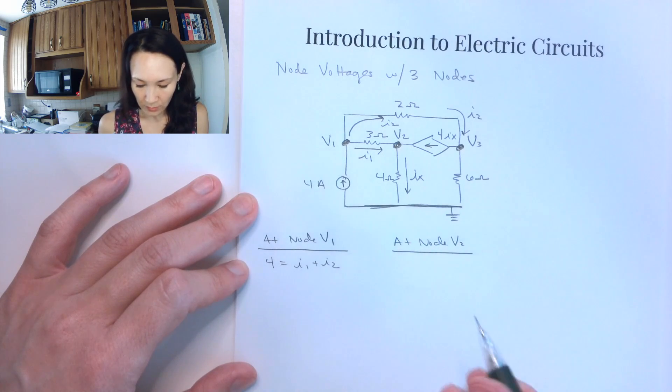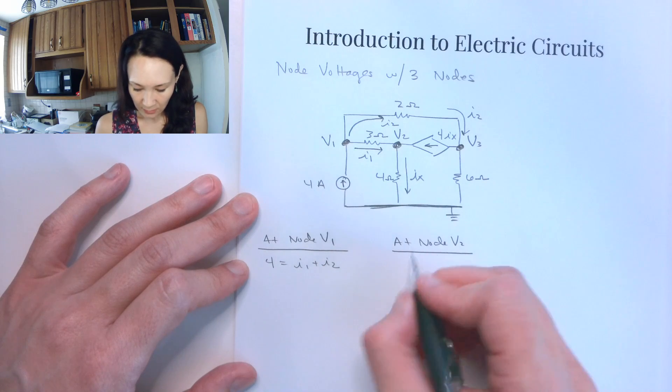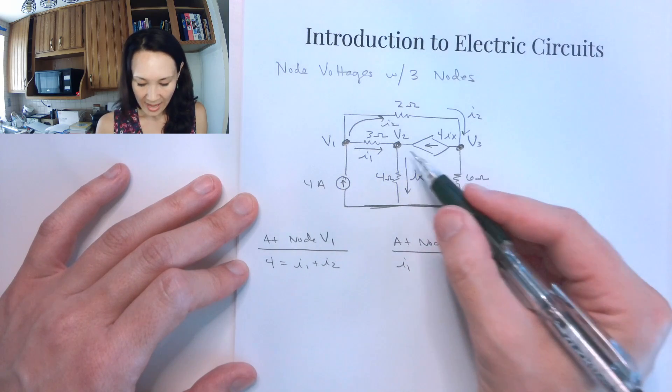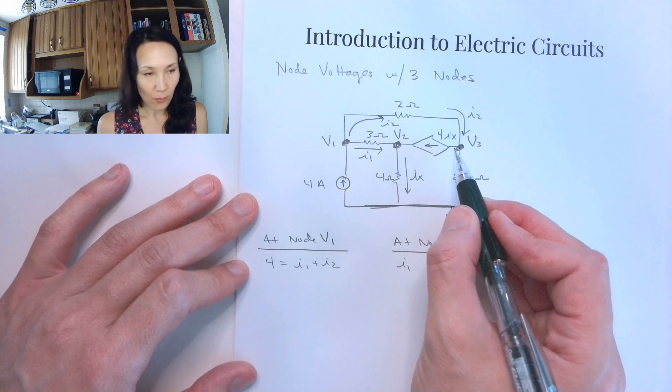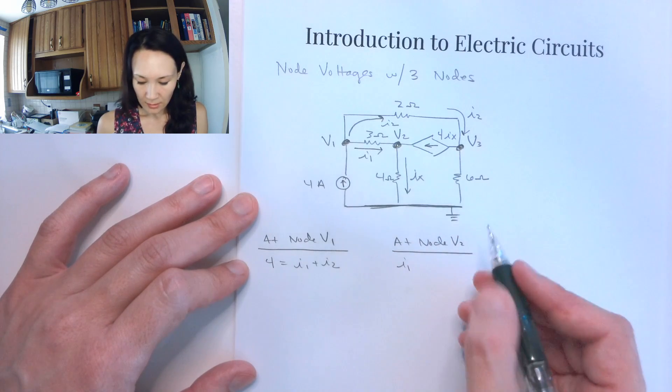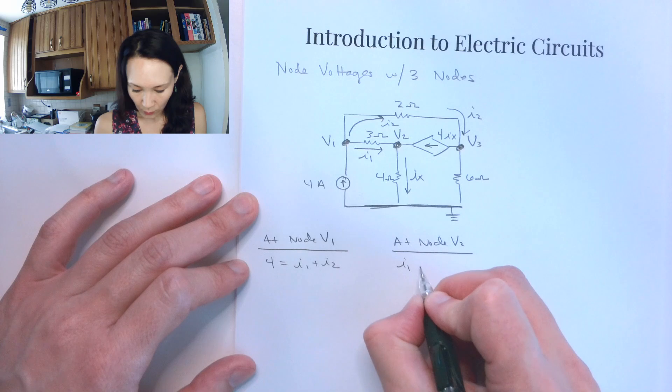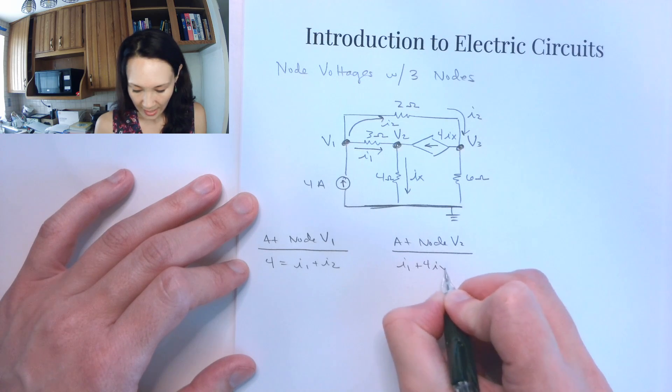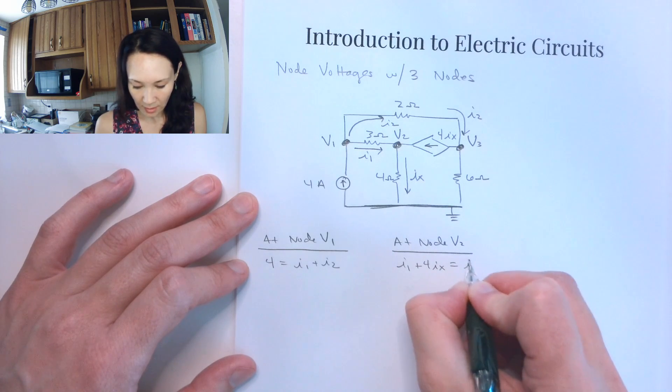So then at node that we labeled V2, we have I1 coming in, we have IX coming out, and we have 4 times IX coming in due to this dependent source. So the currents we have coming in are I1 plus 4 IX, and what we have coming out is IX.